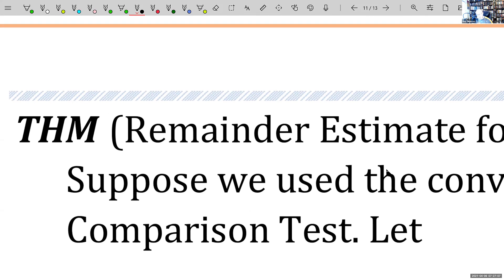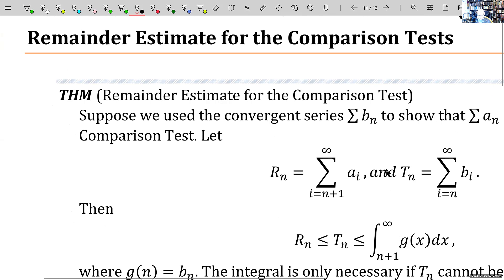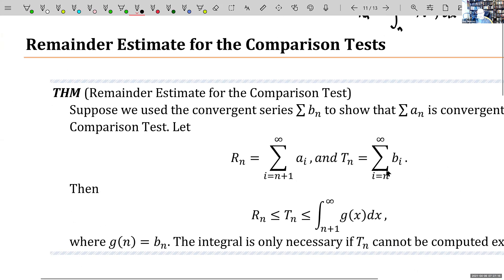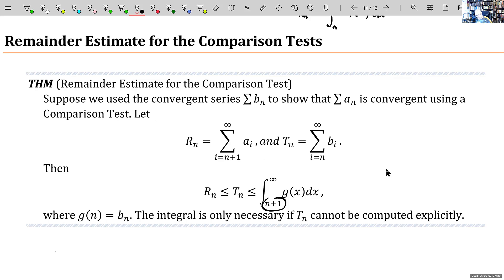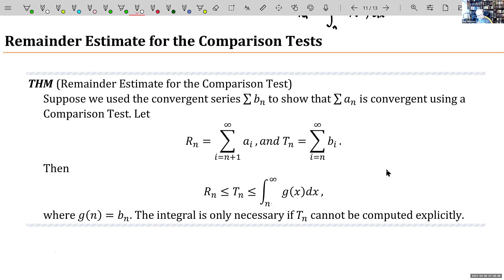The error estimate when using a comparison test is very similar to the integral test. It starts at n plus 1 — just a slight difference in the setup. Actually, I think that n plus 1 is incorrect; it's supposed to be n. I'm not sure why I have it written as n plus 1. Let me erase that — it's supposed to be n. It's basically the same exact estimate.